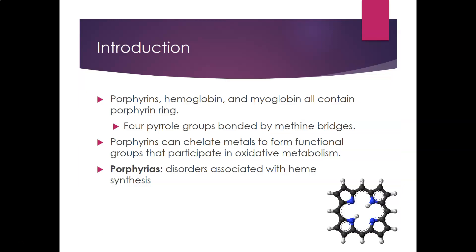Porphyrins, hemoglobin, and myoglobin all contain a porphyrin ring. The porphyrin ring is made of four pyrrole groups bonded by methine bridges. Porphyrins are helpful because you can chelate metals to form functional groups that participate in oxidative metabolism. In heme, the ring can bind iron in the middle, and then oxygen can bind on that iron.